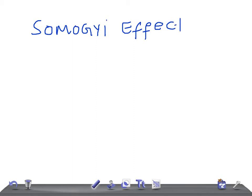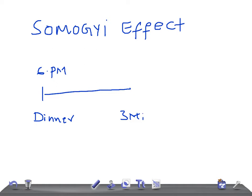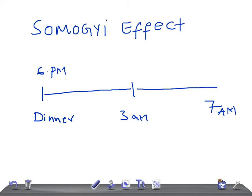Let's start with the Somogyi effect. What is the Somogyi effect? It's nothing but the body's reaction to low glucose, or hypoglycemia. For example, this is dinner time around 6 p.m., then midnight, then 3 a.m., and again 7 a.m. So the patient with type 2 diabetes, soon after dinner, will take NPH insulin.